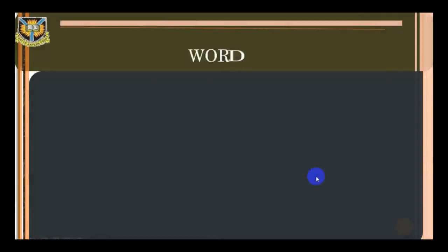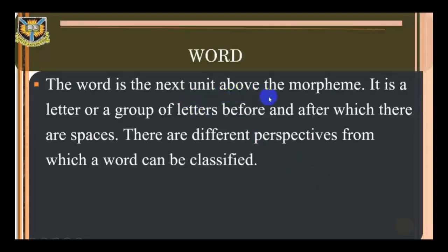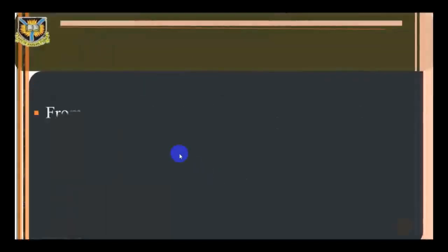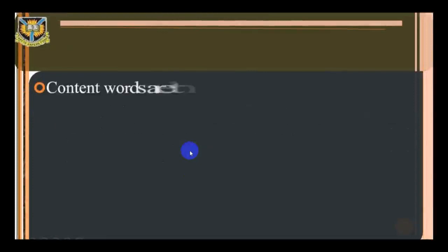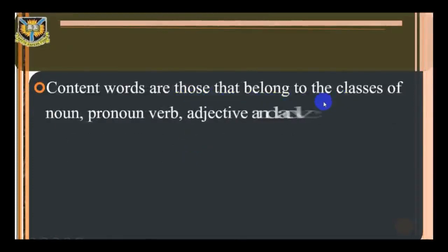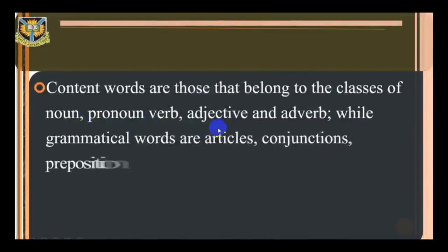Word. The word is the next unit above the morpheme. It is a letter or a group of letters before and after which there are spaces. There are different perspectives from which a word can be classified. From the perspective of function, a word is either a content word or a grammatical word. Content words are those that belong to the classes of noun, pronoun, verb, adjective, and adverb, while grammatical words are articles, conjunctions, prepositions, and others.